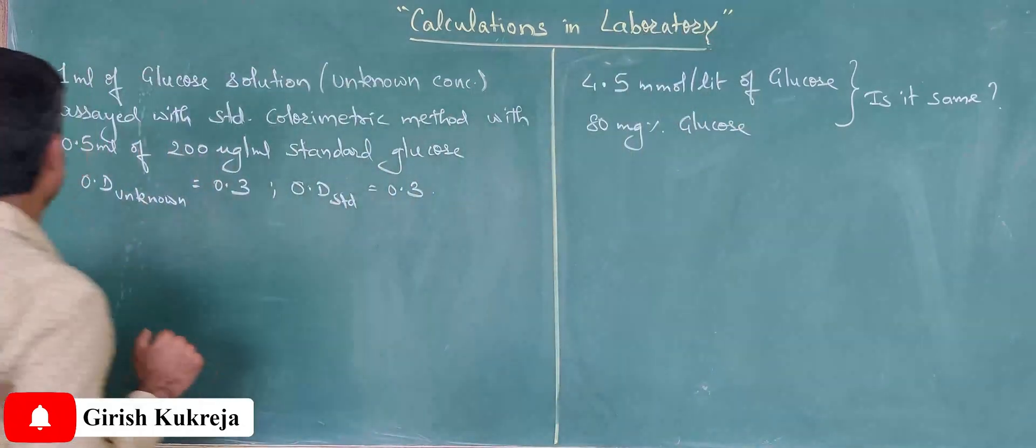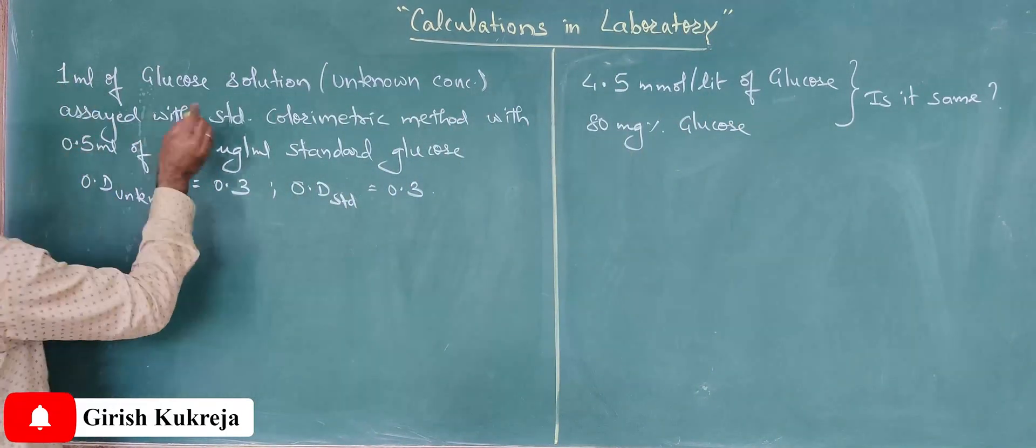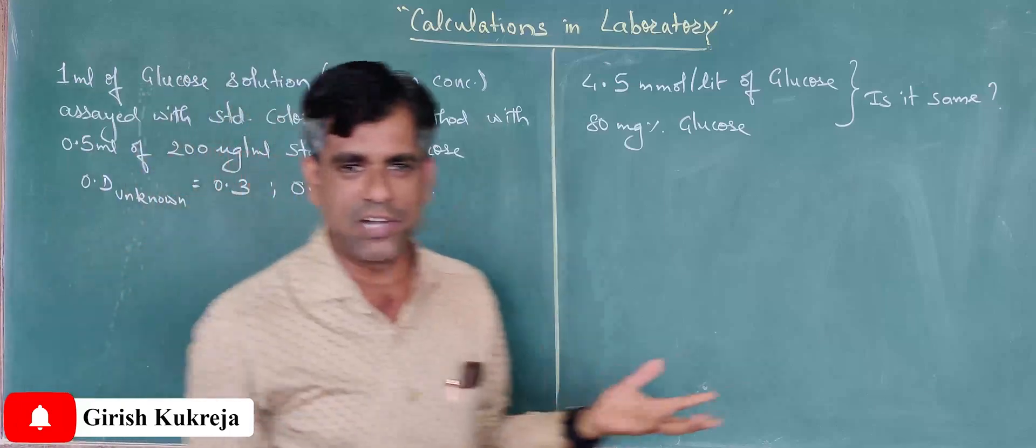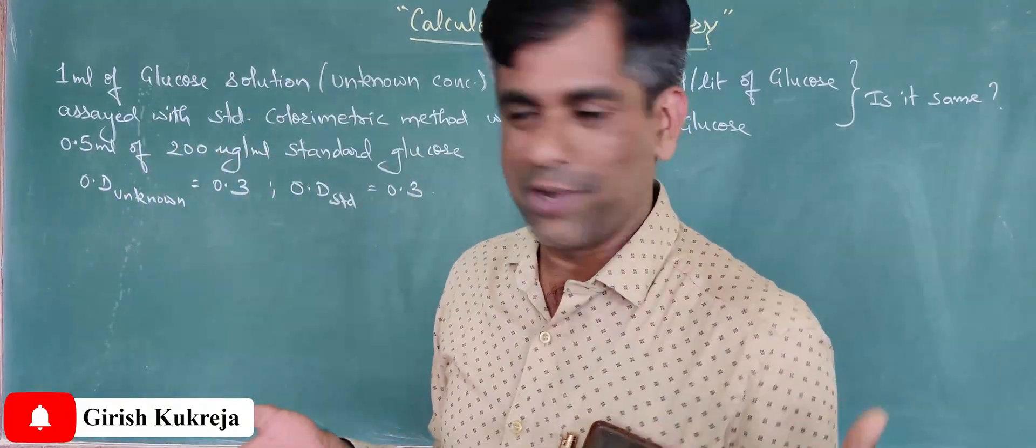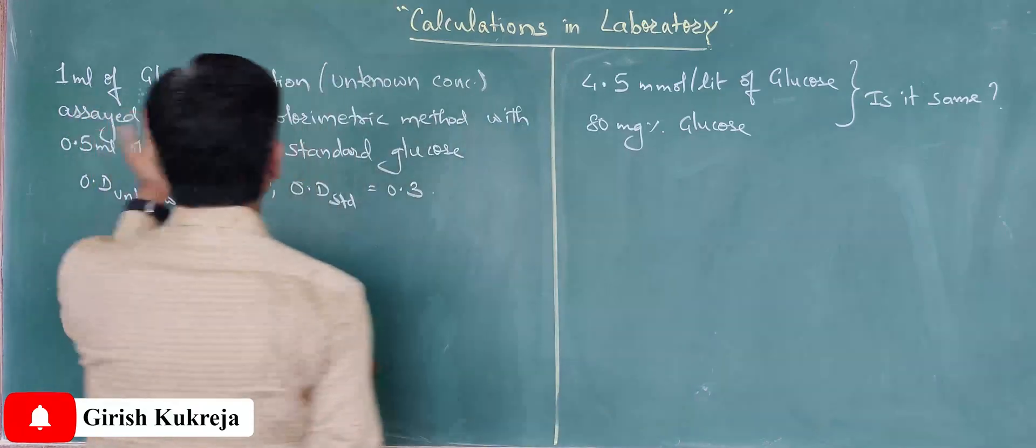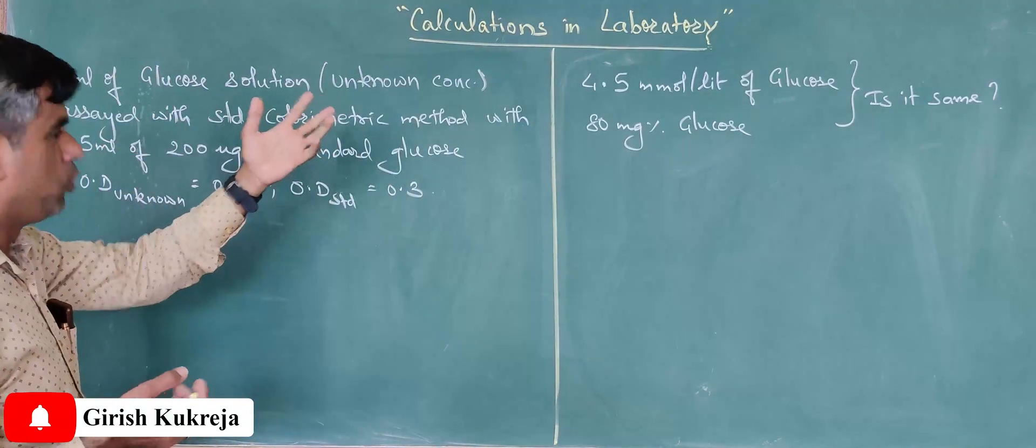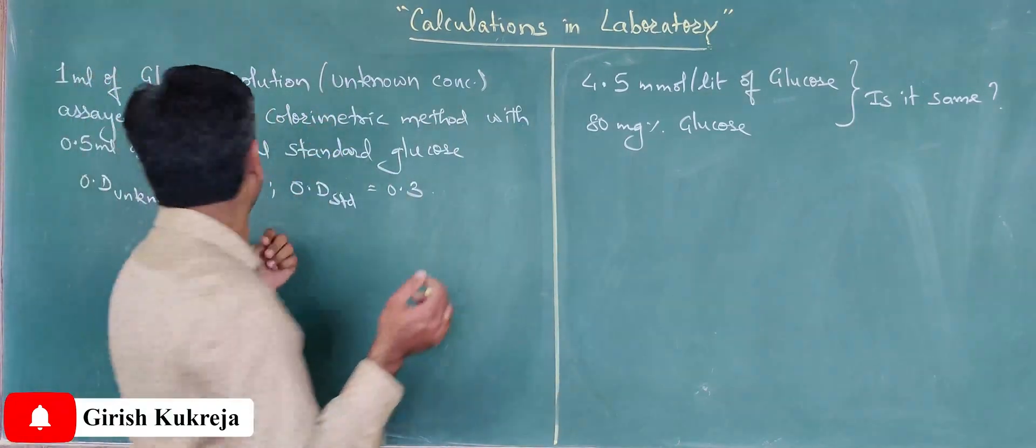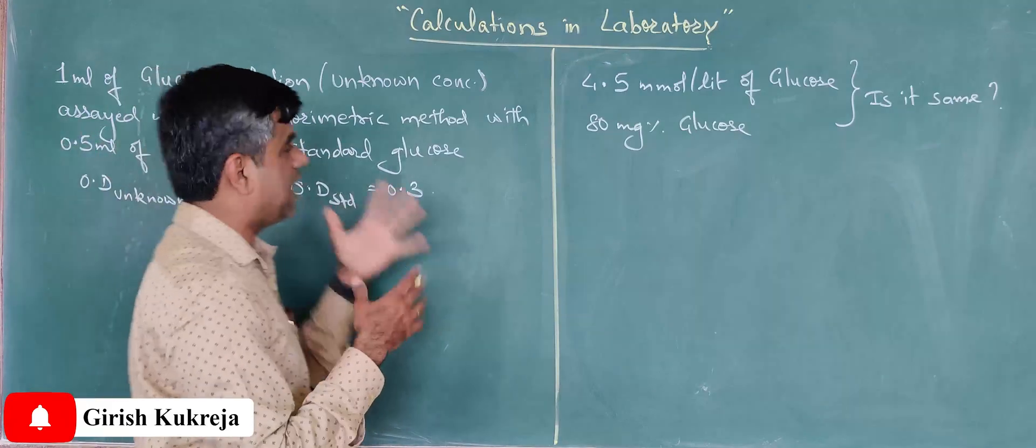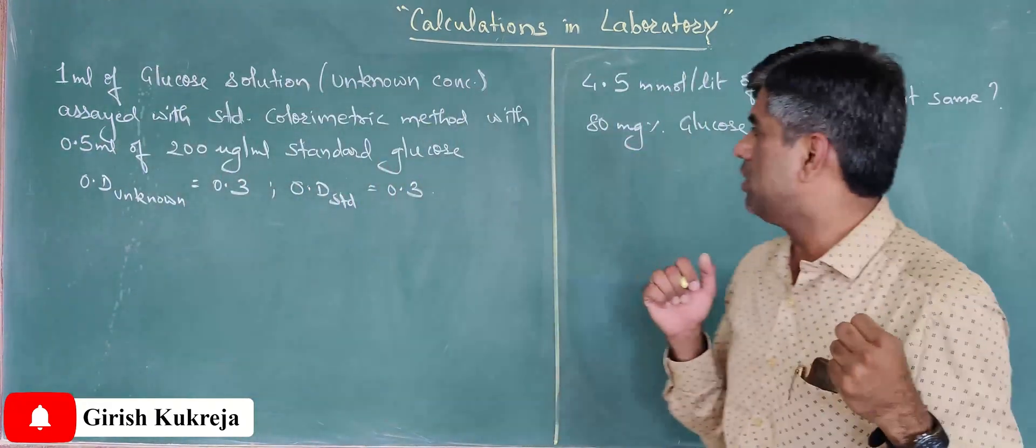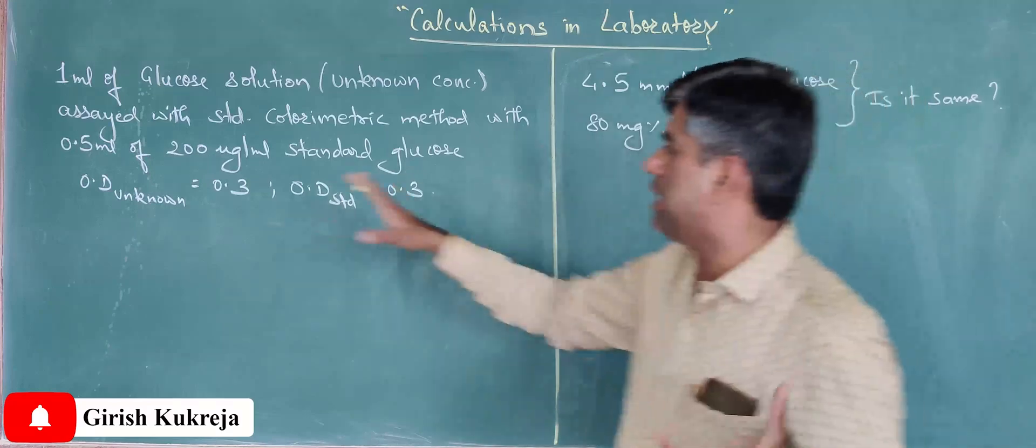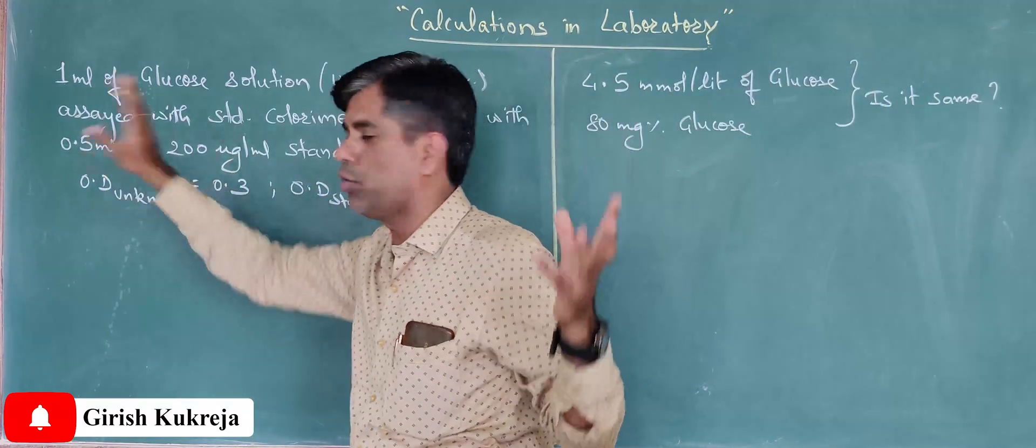So here I go: 1 ml of glucose solution whose concentration I don't know—I am performing experiments to know what I don't know. Anyways, so 1 ml of glucose whose concentration I don't know was assayed with a standard colorimetric method.